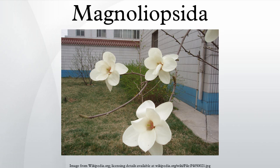The Cronquist system used this internal taxonomy: class Magnoliopsida equals Dicotyledons, with subclass Magnoliidae, subclass Hamamelidae, subclass Caryophyllidae, subclass Dilleniidae, subclass Rosidae, and subclass Asteridae.